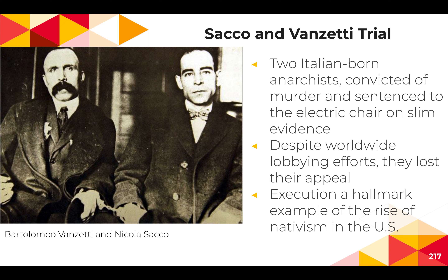Let's talk about immigration and zero in on the Sacco and Vanzetti trials. In 1920, two Italian immigrants — Nicola Sacco and Bartolomeo Vanzetti — were arrested for the murder of two men and for stealing about fifteen thousand dollars from a shoe factory in Massachusetts. Sacco and Vanzetti were followers of an Italian anarchist group who believed in violent revolution.